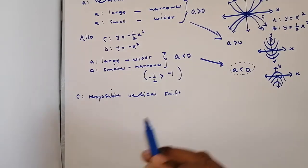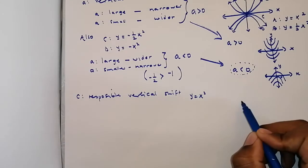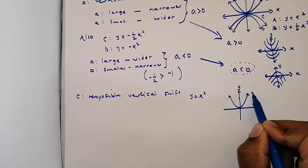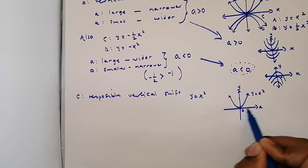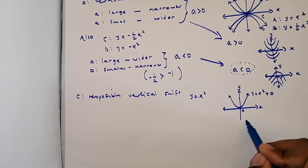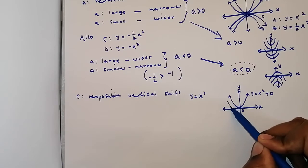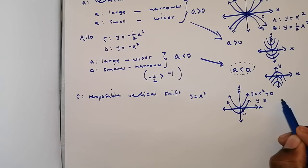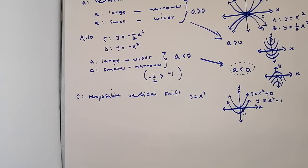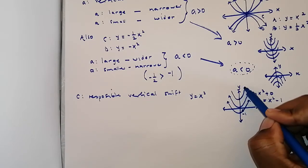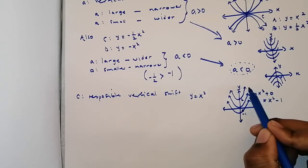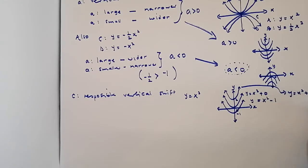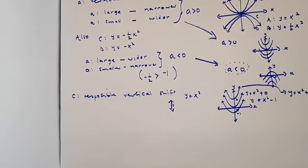Let's say for example we've got y = x². Here c is zero, so I didn't include it, but you can include it if you want. The graph can also be shifted down one unit — that gives y = x² - 1. Or the graph can be shifted up, say by 2, giving y = x² + 2. So c is responsible for the vertical shift of the function.